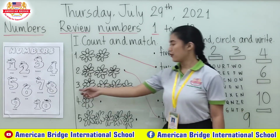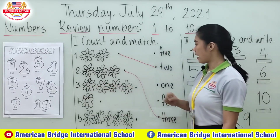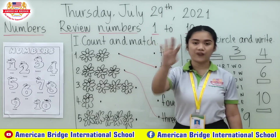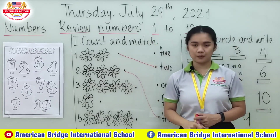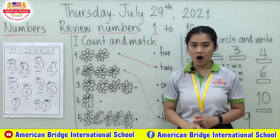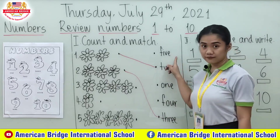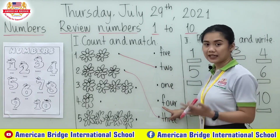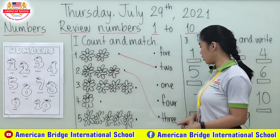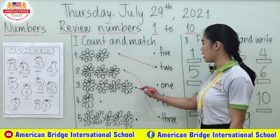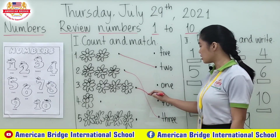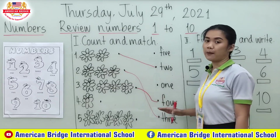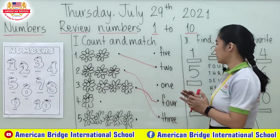Now let's move on to the third picture. So we have how many flowers everyone? We have 1, 2, 3, 4 — 4 flowers. Now 4 spells F-O-U-R. It starts with the letter F. What's next? O-U-R. Very good everyone, so this is the correct answer. Let's match these four flowers to the number four word.